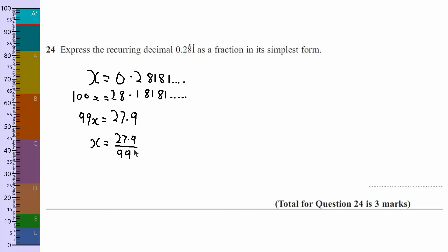Now we can't have decimals in this, so what I'm going to do is, I'm going to times top and bottom by 10, to get rid of the decimal. 279 over 990.